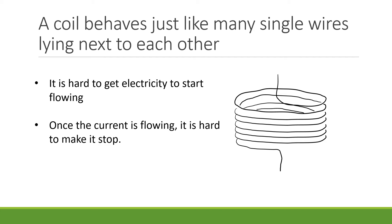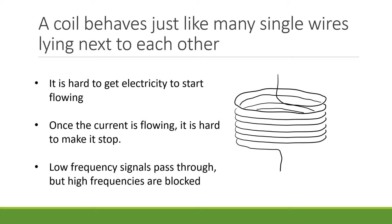This is why in inductors, low frequencies pass through easily but high frequencies get blocked out. Low frequencies have a lot of time to change, so they have a lot of time to allow the current to start moving and then a long time to allow the current to stop, so they pass through relatively easily. But high frequency signals are trying to start and stop really fast. Inductors are resistant to changes in current, so high frequency signals just don't get through inductors very well. That's why inductors allow low frequency signals to pass through but block out high frequencies.